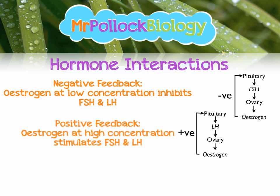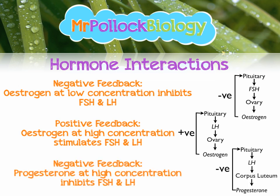For positive feedback: oestrogen at high concentration stimulates both FSH and LH. The pituitary releases lots of LH, which causes the ovaries to release oestrogen, and this positively affects the pituitary — more oestrogen means more LH, which means more oestrogen, which means more LH, and so on. The last example is negative feedback again: progesterone at high concentration inhibits FSH and LH. The pituitary produces LH, which causes the corpus luteum to produce progesterone, but that progesterone inhibits the pituitary from producing more LH, reducing progesterone levels. AQA loves these as feedback examples.